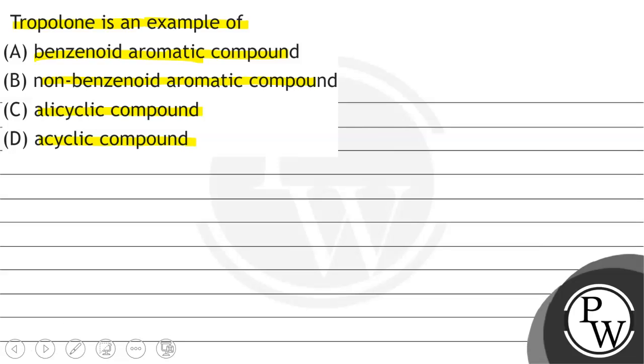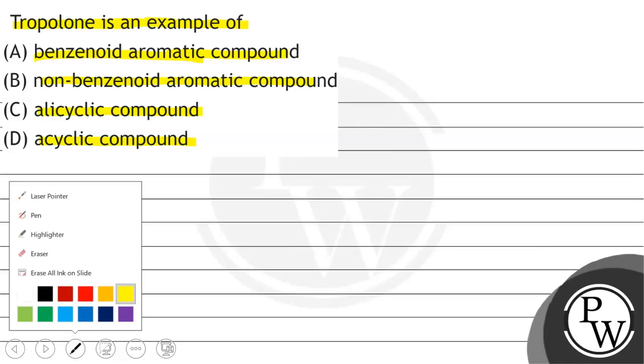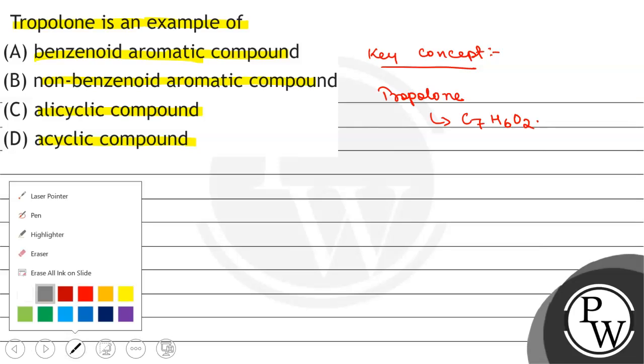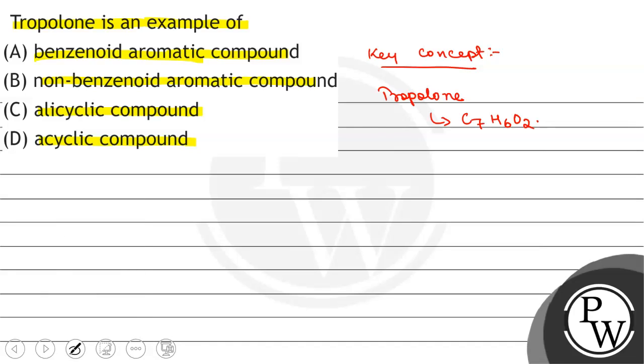We will solve this question. First, we will see what the key concept is. The key concept is tropolone. The molecular formula is C7H6O2, and this is an organic compound which is pale yellow.